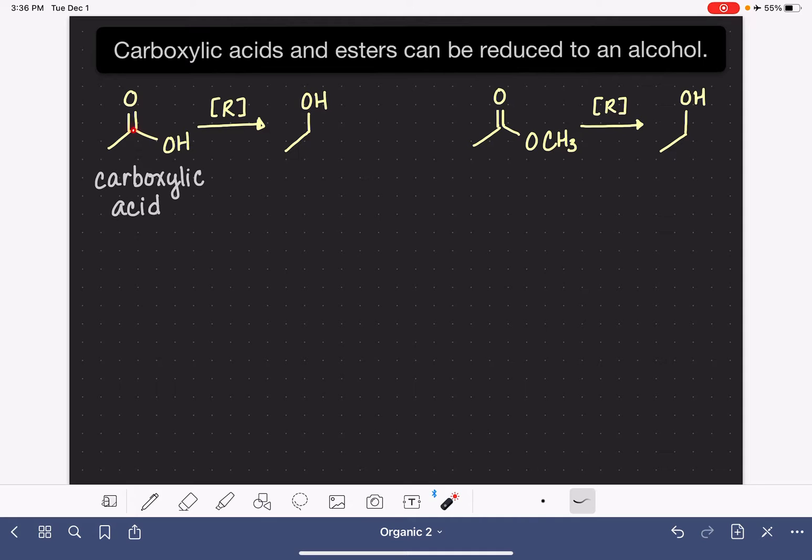When a carboxylic acid is reduced, the carbon of the carbon-oxygen double bond is retained, and the functional group attached to that is converted to a simple alcohol OH group.